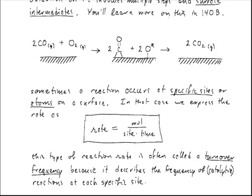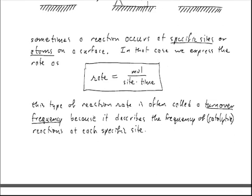Sometimes a reaction might occur on very specific sites or atoms on a surface. In that case, we express the rate as the number of moles of reaction occurring per special site per time. An example of this type of reaction rate is something called a turnover frequency, where people count the number of sites and the amount of reaction occurring and write it down as the number of times the reaction turns over — that is, the catalytic cycle repeats itself — per time per site.